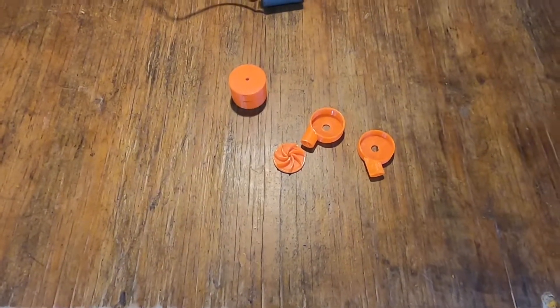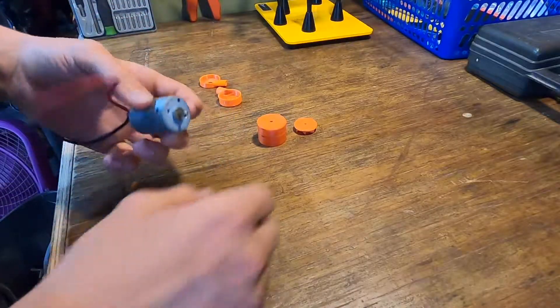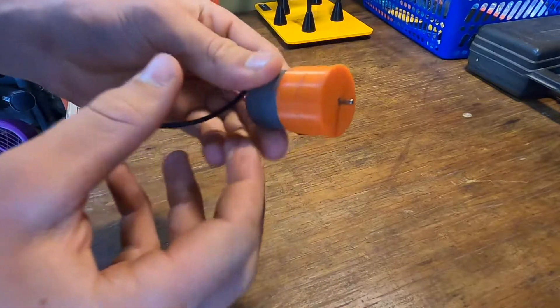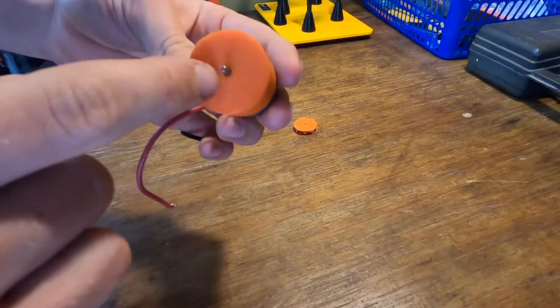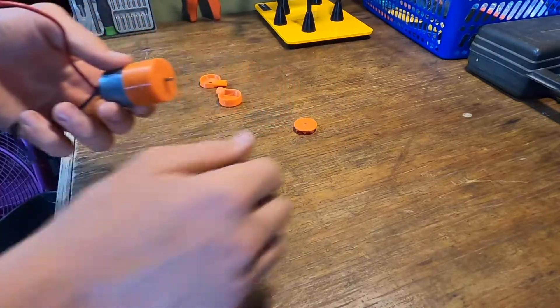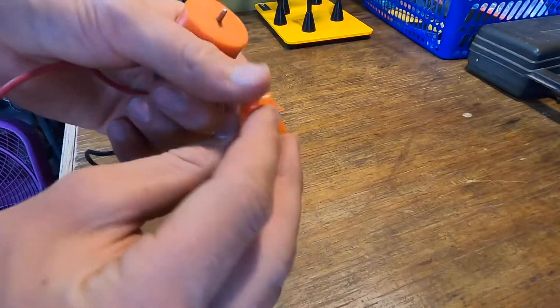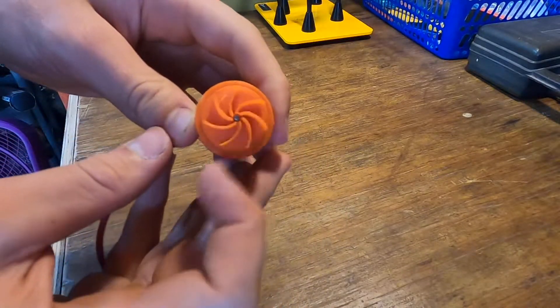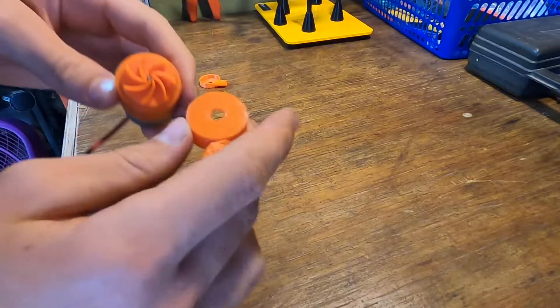All right, so we got the motor here and this is the part that goes over the motor. Just snap it on like that. I just have to use a screwdriver to make that hole a bit bigger, as well as on the impeller. For this you just put it on. Then for the outer housing,